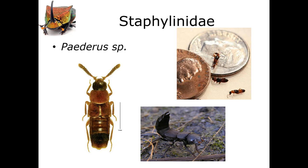Sometimes we will see the adults running around with their abdomen curled up and over their thorax. This is a lot like the way we see earwigs, or scorpions — that sort of thing. So they will run like that, and this can freak some people out because it does remind them of scorpions. They're not dangerous — these things aren't going to bite you or sting you in any way, and they're pretty small.